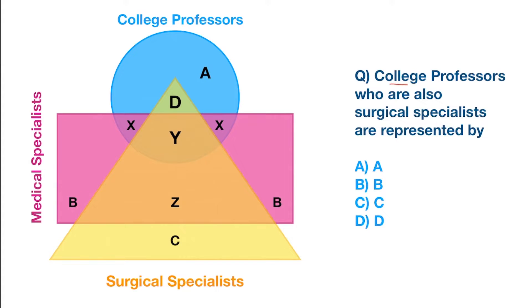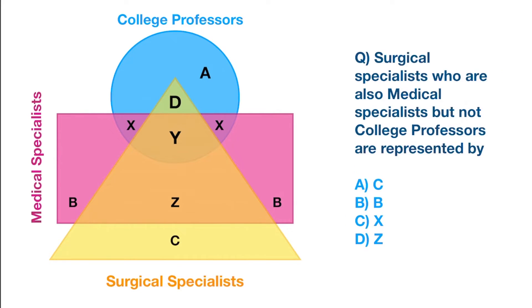The first question says college professors who are also surgical specialists are represented by. So we need to look for intersection between the college professors and surgical specialists. And if you carefully observe that intersection is this part. Therefore, the answer is D. Look at the second question.